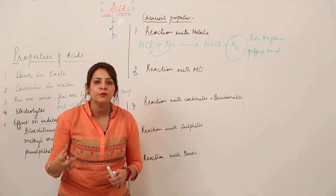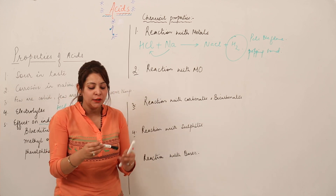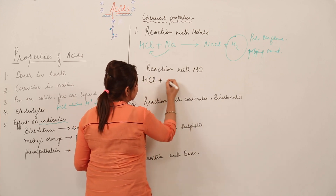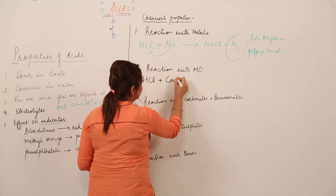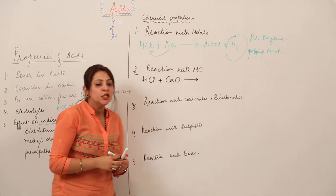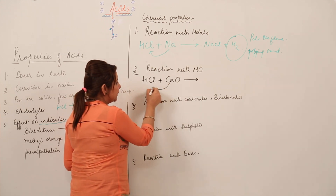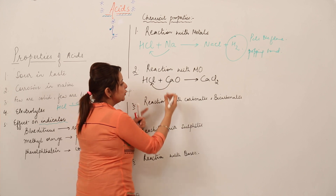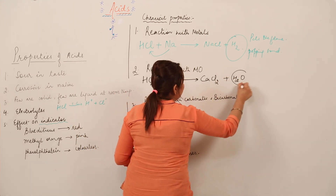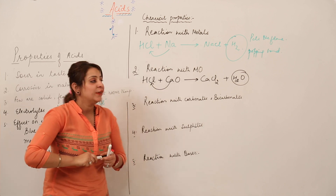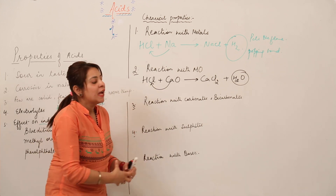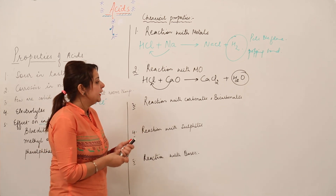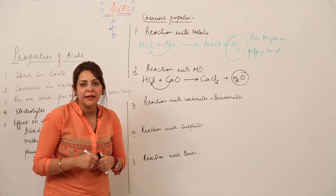Second is the reaction with metal oxide. Suppose I have an acid and a metal oxide — say calcium oxide. They form the respective salt, calcium chloride, and what remains gives us water. So when acid reacts with a metal oxide, it forms a salt and water.